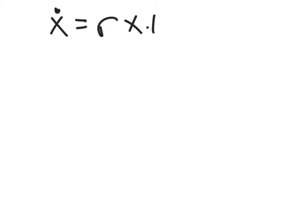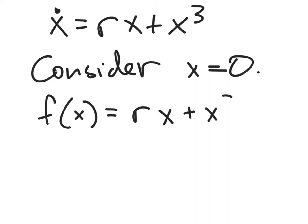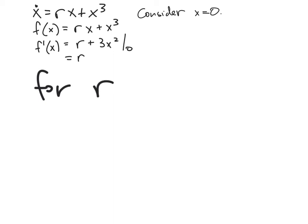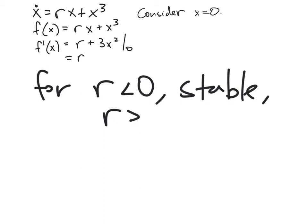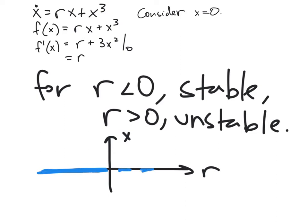There's another important case of the pitchfork bifurcation. If ẋ = rx + x³, we're going to have a slightly different picture. Let's consider the x = 0 fixed point and watch what happens to its stability as r changes. Here f(x) = rx + x³, and we compute stability by finding f′(x) = r + 3x², evaluated at 0, which equals r. So for r < 0, stable; for r > 0, unstable. The zero case looks identical to the pitchfork bifurcation we were looking at a moment ago.